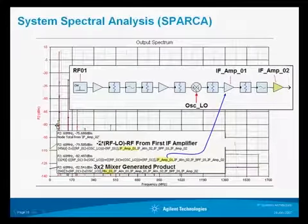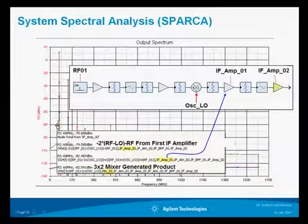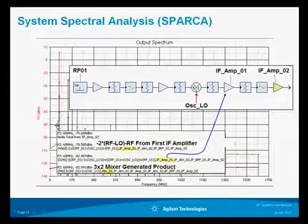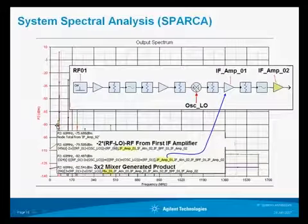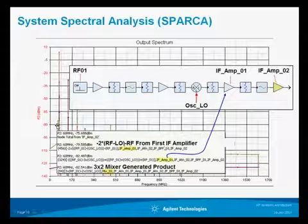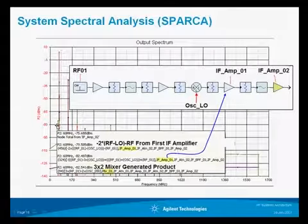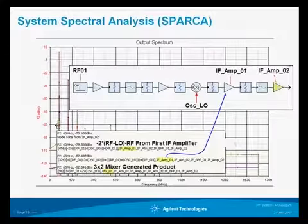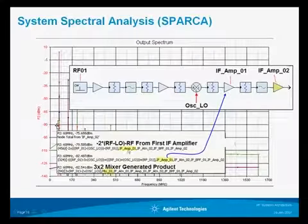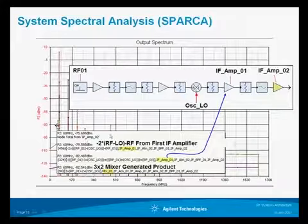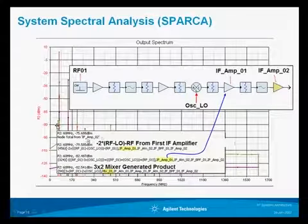Looking at the output spectrum again, we see some other components. At 60 megahertz we have an in-band signal — remember our bandwidth is 30 megahertz — so these would possibly be of concern. This is the minus 2 times RF minus LO minus RF from the first amplifier, or the third-order product from the first IF amplifier. There's also a 3-by-2 mixer product being processed through the system — this one comes from the mixer, and these come from IF amplifier 01. The node total at 60 megahertz represents the whole combined result.